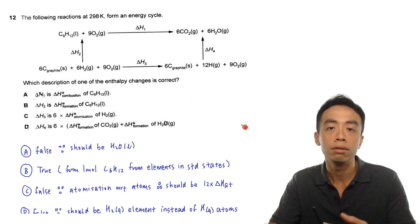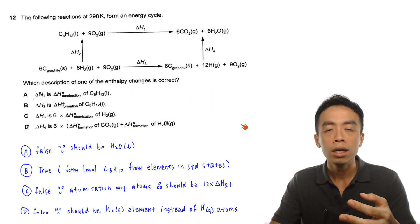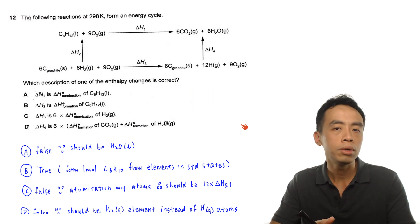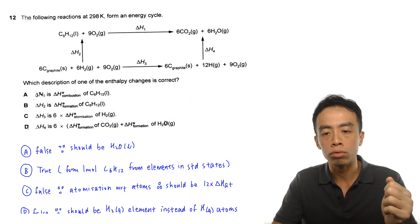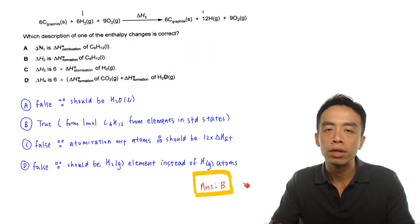This question essentially just requires familiarity with the definitions for enthalpy change terms — testing combustion, formation, and atomization. Running through the options: A is false, B is true, C and D are false. So the answer is option B. That was the discussion for question 12, a question on energetics. If you found this useful, please like this video and subscribe to my YouTube channel for more weekly video lessons. Thanks for watching.